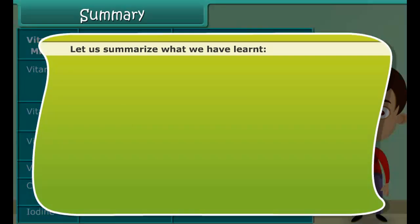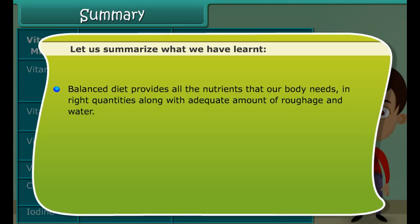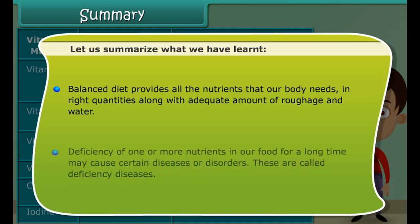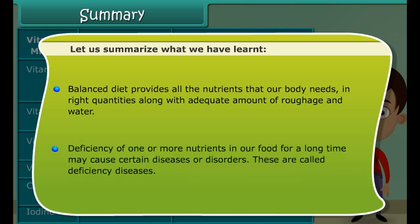Vitamins help us in protecting our body against diseases. Balanced diet provides all the nutrients that our body needs in right quantities, along with adequate amounts of roughage and water. Deficiency in one or more nutrients in our food for a long time may cause certain diseases or disorders — these are called deficiency diseases.